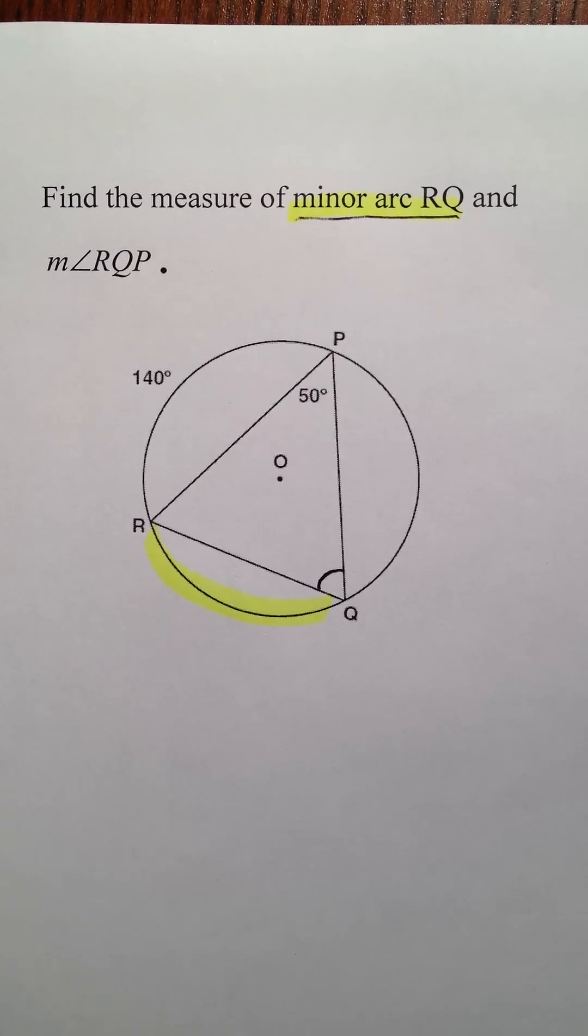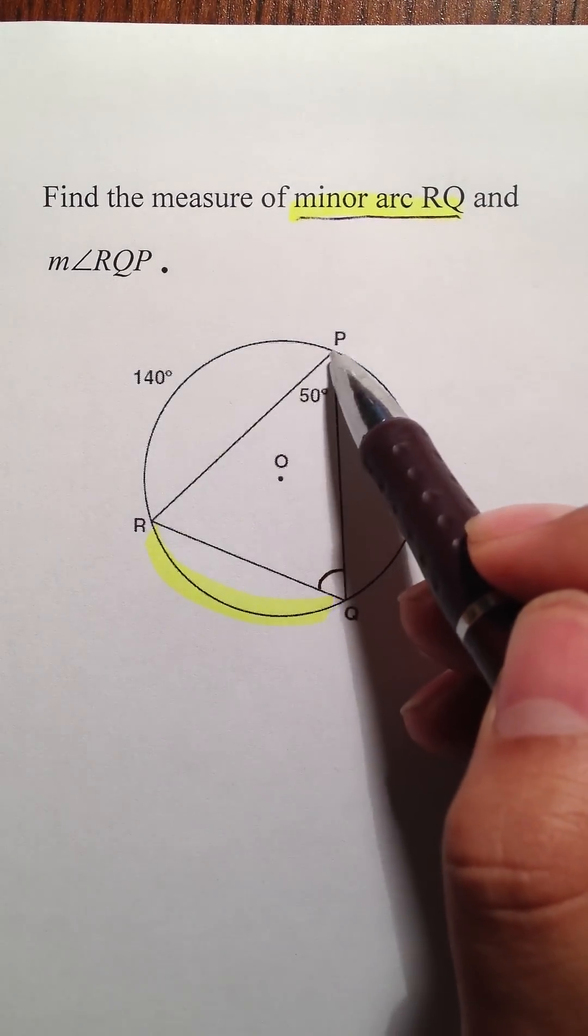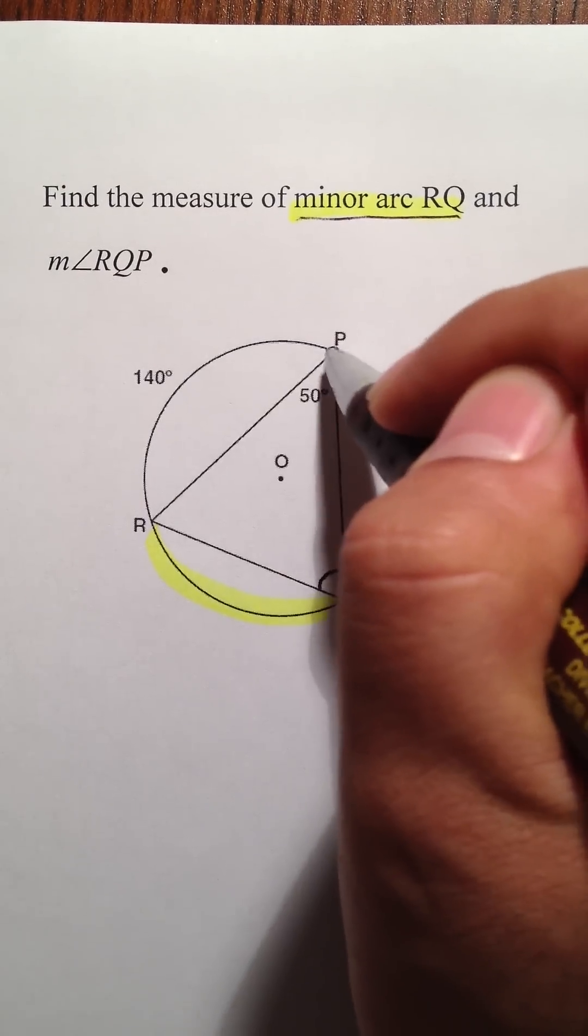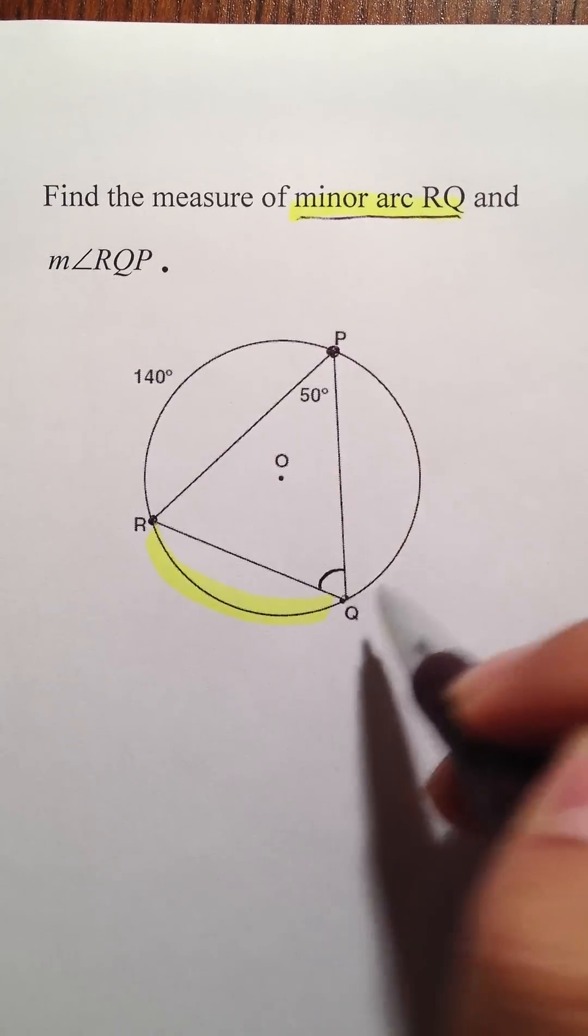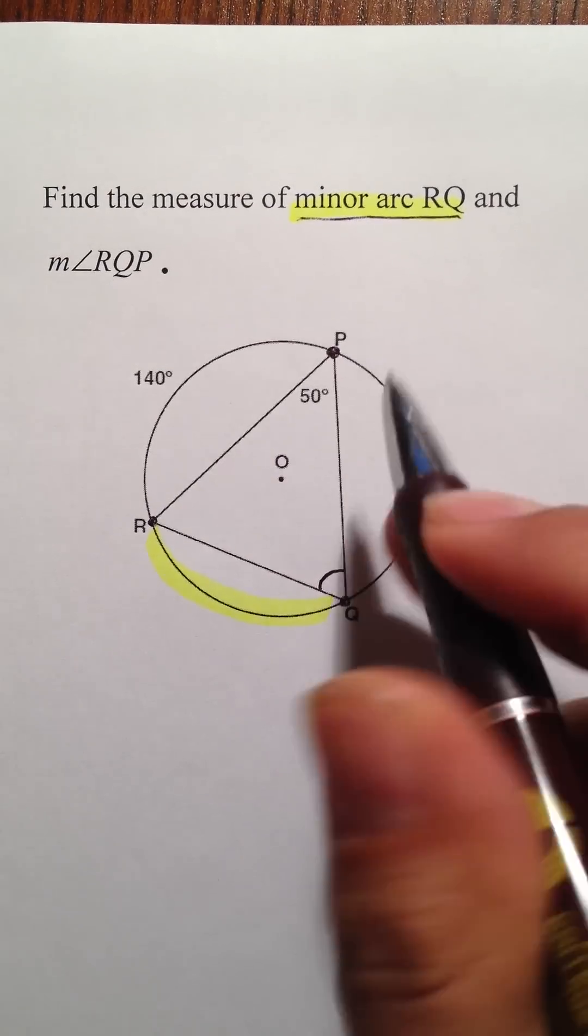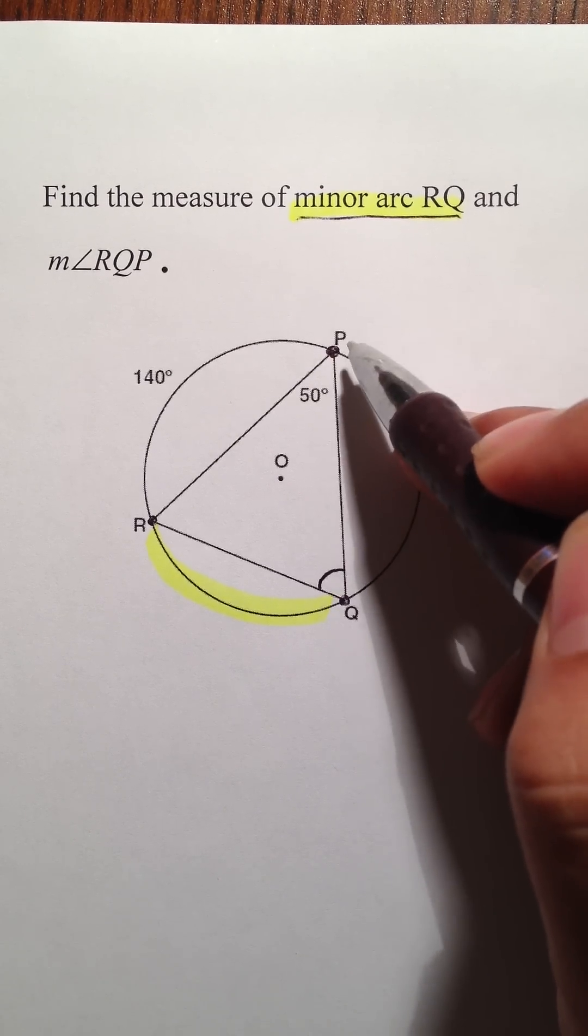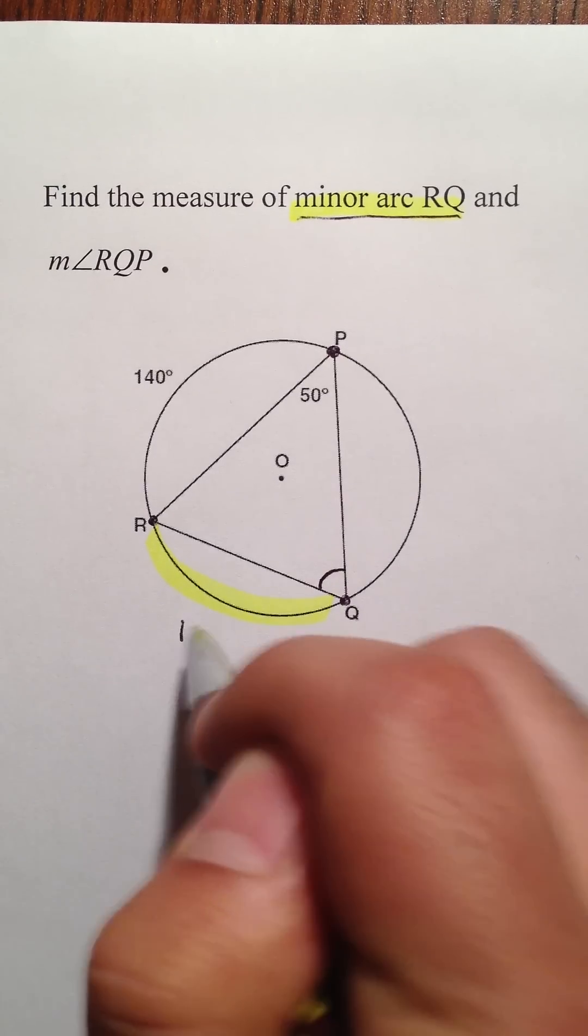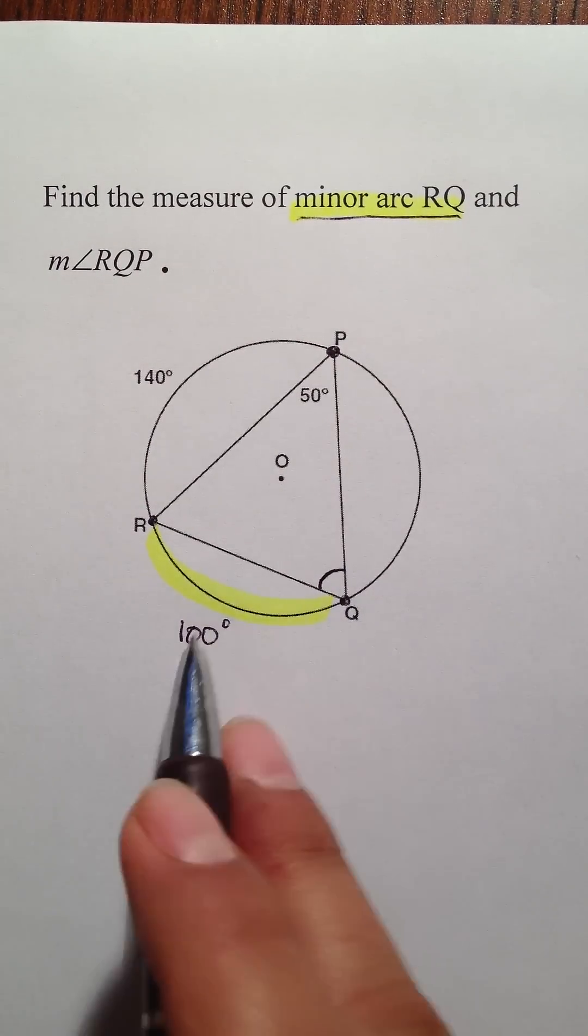What you're going to have to notice is this rule only works on angles that are touching some part of the circle and the beginning and the end of the minor arc. So if this scenario happens, what you do is you look at that angle that's touching the circle and you double it. Therefore, the minor arc RQ is 100 degrees.